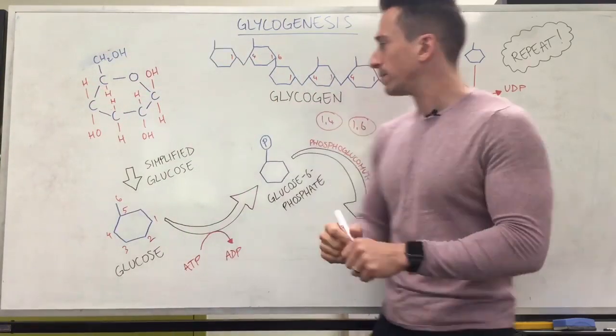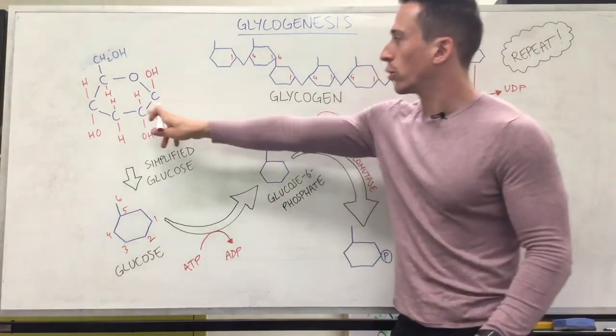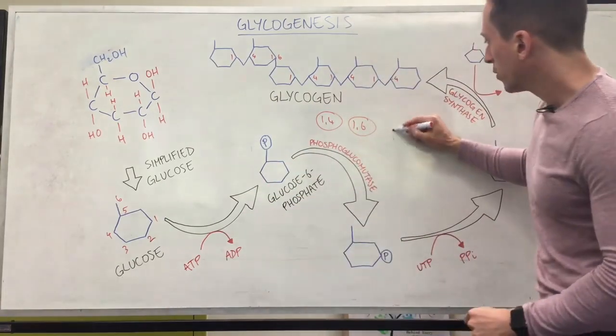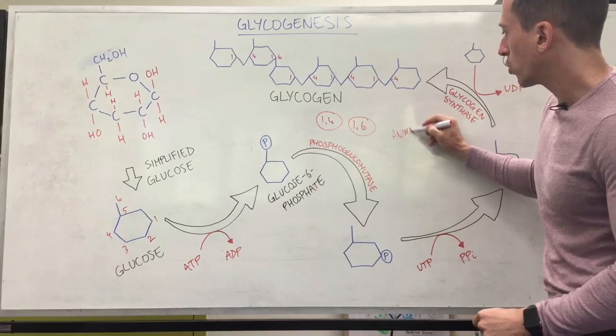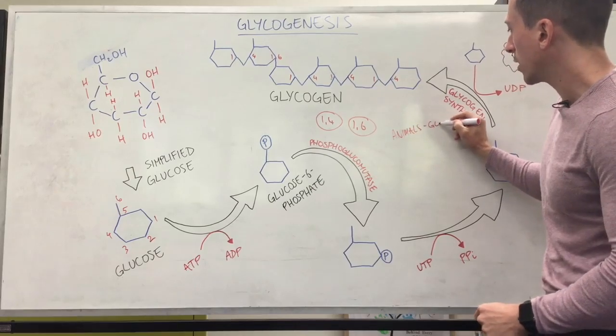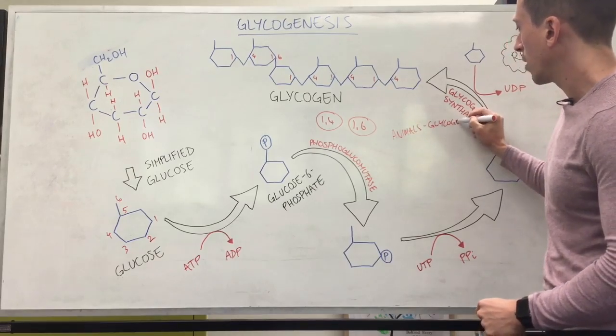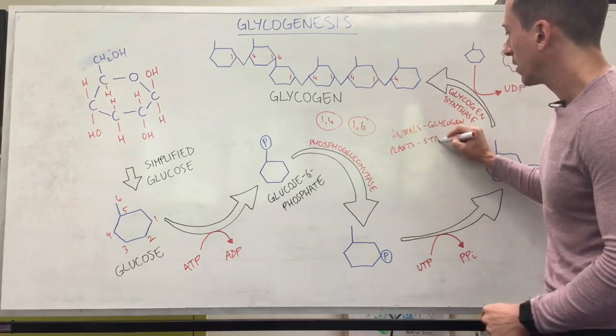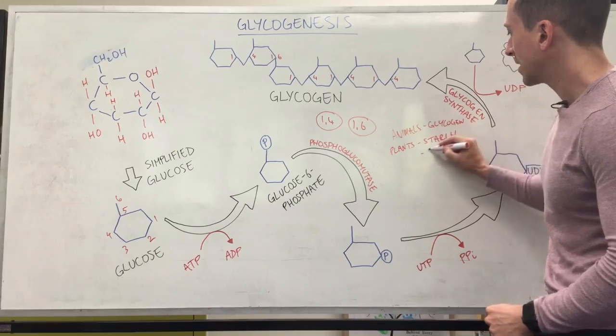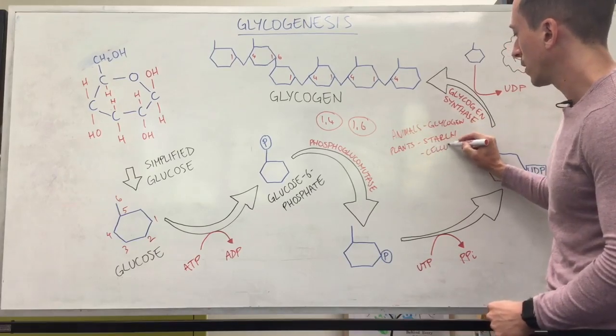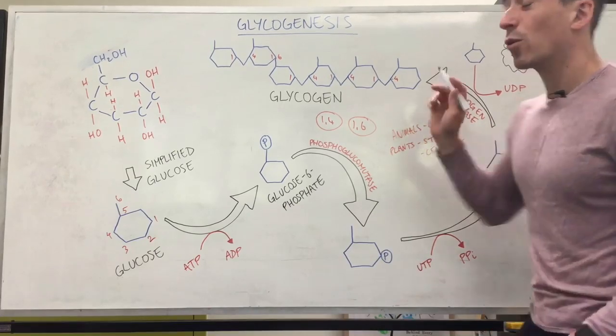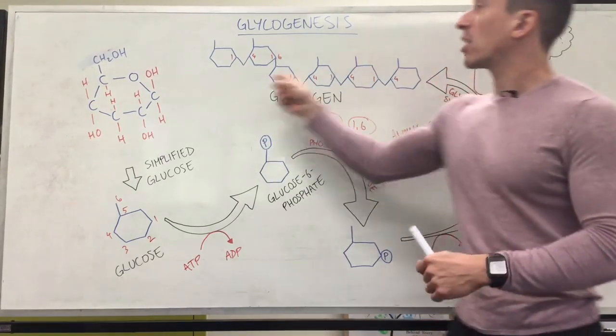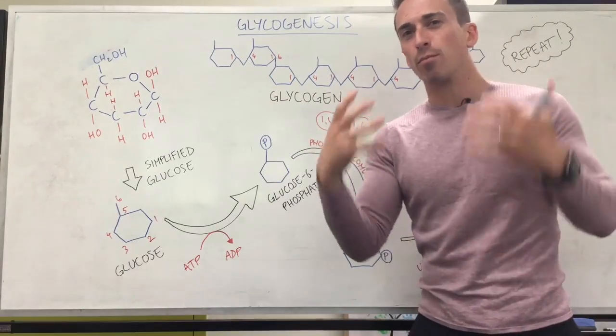Now here's an important point. When we store glucose in the form of glycogen, this is how animals store glucose. So animals store glucose in the form of glycogen. Plants store glucose in the form of starch and cellulose. And they are really similar to this structure. In actual fact, what you'll find is that starch is nearly identical. It's just not as branched.